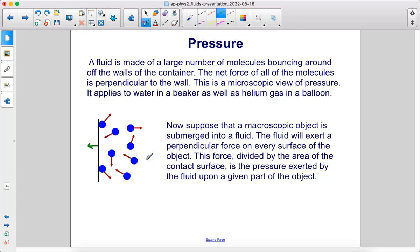Now, suppose that a macroscopic object is submerged into a fluid. The fluid will exert a perpendicular force on every surface of the object. This force, divided by the area of the contact surface, is the pressure exerted by the fluid upon a given part of the object.